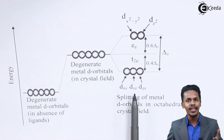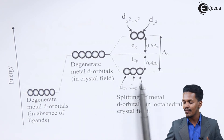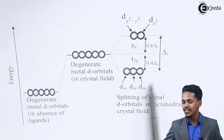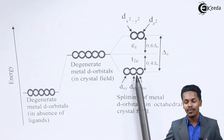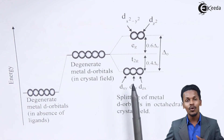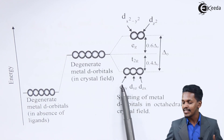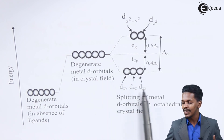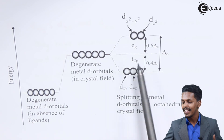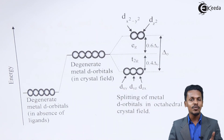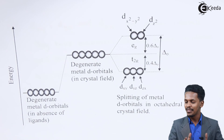These are the two differences between the octahedral and the tetrahedral complex. In the octahedral complex, dxy, dyz, and dzx are present at the lower energy level, while in the tetrahedral complex, dxy, dyz, and dzx were present at the upper energy level. That is the key difference between these two complexes.